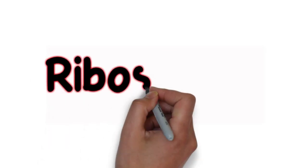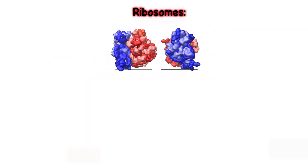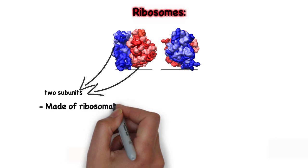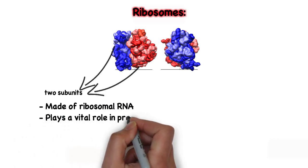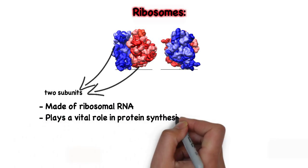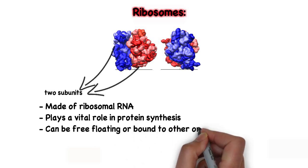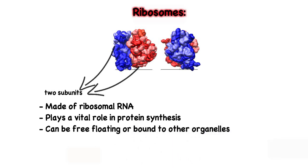Another important organelle are ribosomes. Ribosomes are small organelles that contain two subunits. They are made up of ribosomal RNA and play a vital role in protein synthesis. The ribosome can be free-floating in the cytoplasm or bound to organelles such as the rough endoplasmic reticulum.